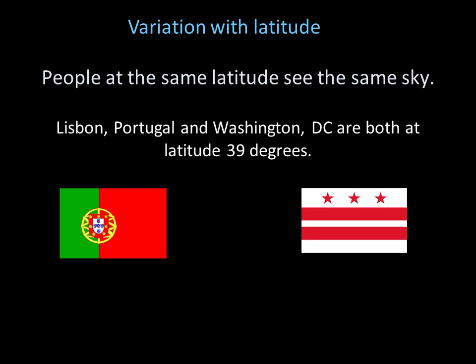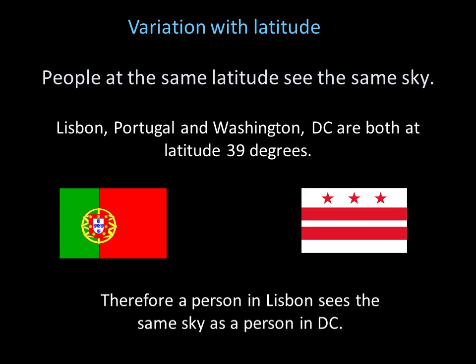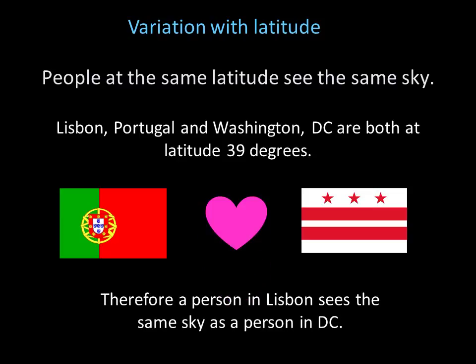Latitude matters. The sky from somewhere north, say Niagara Falls, looks different than the sky somewhere very south, like Sydney, Australia. But people at the same latitude get to see the same sky. For example, Lisbon, Portugal and Washington DC are both at a latitude of 39 degrees — so if you have a sweetheart in Lisbon, they'll get to see the same sky that you see in Washington DC.